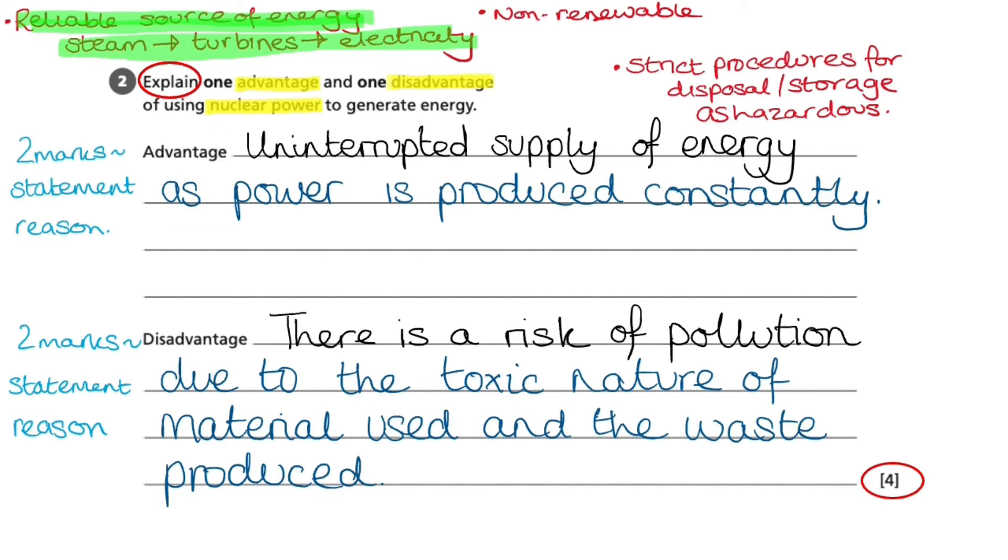We can move on now to the disadvantage. Again, I need to make a statement for my disadvantage. So in the recall earlier, I said that there are strict procedures for disposal and storage as it can be hazardous. Well, we also noted that there could be a risk of pollution in the unintended consequence of radioactive material being released into the environment. So that's my first point for the disadvantage is that there is risk of pollution. And then I need to give the reason why. And again, this is simply due to the toxic nature of material used and the waste produced.